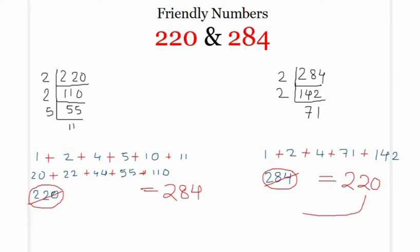It looks like made for each other. So the sum of the proper divisors of the number 220 is equal to 284, and the sum of all the proper divisors of 284 is equal to 220. Made for each other. That's why they are called friendly numbers. There is one more name to this type of numbers: they are called amicable numbers.